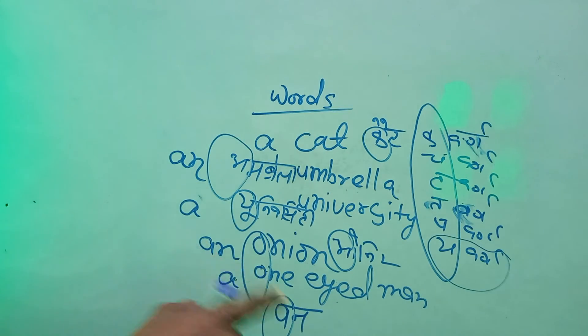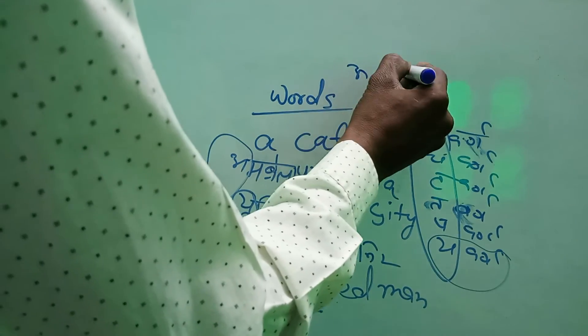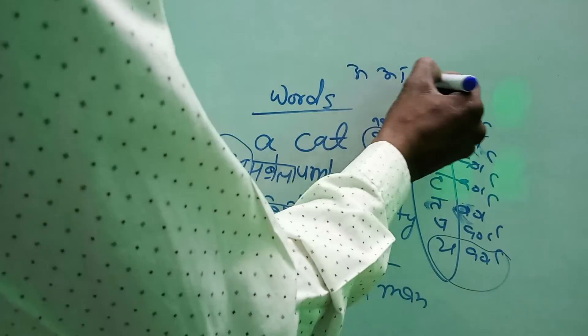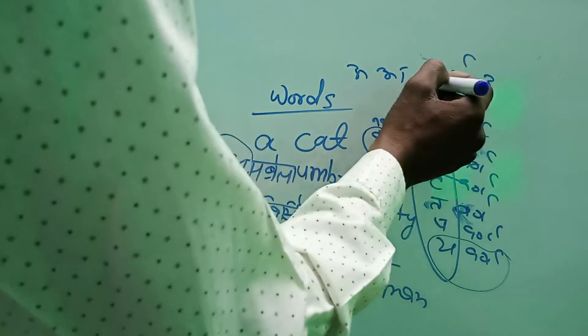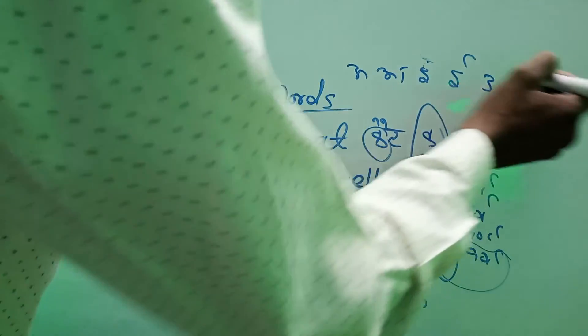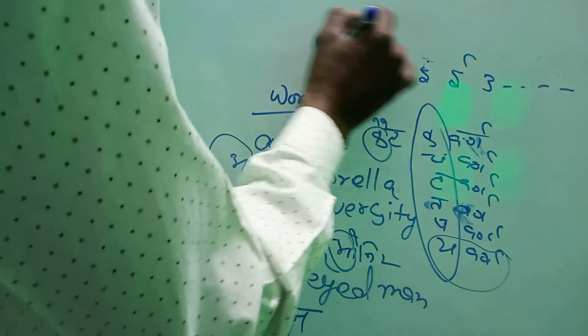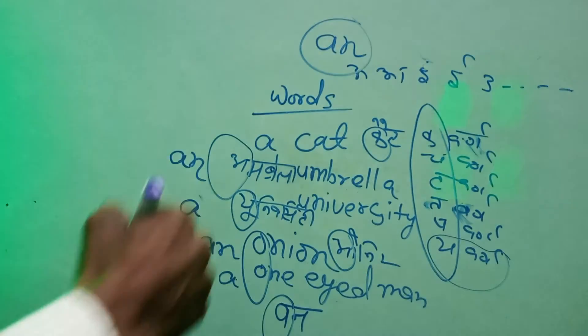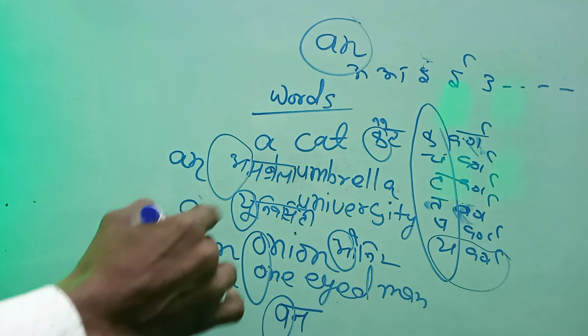So be sure: even if a word is written with a vowel letter, it is not necessary that 'an' will be used — it depends on pronunciation. 'Onion' starts with an O sound (vowel sound) so 'an onion' is correct. But 'one-eyed man' — 'one' is pronounced 'wun,' which is a W sound, so 'a one-eyed man' is correct. (Pronunciation जो vowel sound से शुरू हो — O, A, आ, इ, ई, उ, ऊ — तो 'an' लगेगा; Y/W sound हो तो 'a' लगेगा।)